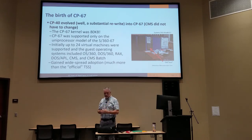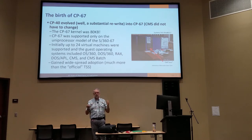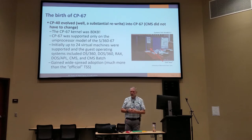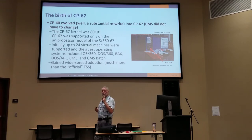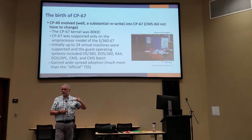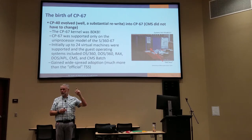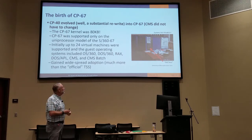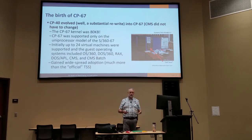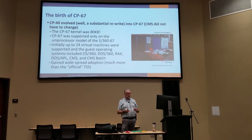The Cambridge Scientific Center rewrote CP40 — completely rewriting it to CP67. CMS was still the same. I love that the kernel was 80KB. CP67 only supported the uniprocessor and never supported the dual model. You could run up to 24 virtual machines, which was pretty good. You could run a whole bunch of operating systems: OS/360, DOS/360, RACS — IBM's early attempt at timesharing — DOS APL, CMS, and CMS batch.